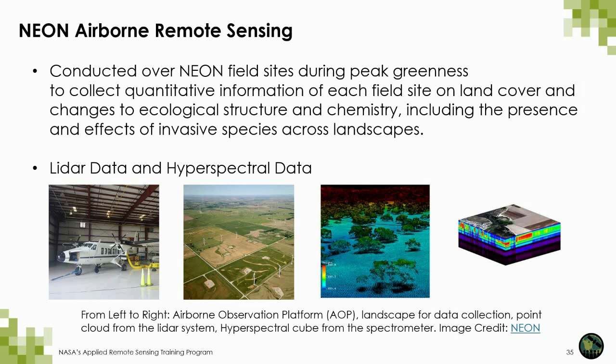The NEON Airborne Observation Platform is an array of instruments installed into a light aircraft to collect high-resolution remote sensing data at low altitude. Airborne remote sensing surveys are conducted over NEON field sites during peak greenness to collect quantitative information on land cover and changes to ecological structure and chemistry, including the presence and effects of invasive species. The aircraft collects gridded LiDAR data at 1 meter spatial resolution and digital photography at 0.25 meter resolution. Each year NEON surveys about 70 to 75 percent of their field sites on a rotating basis.